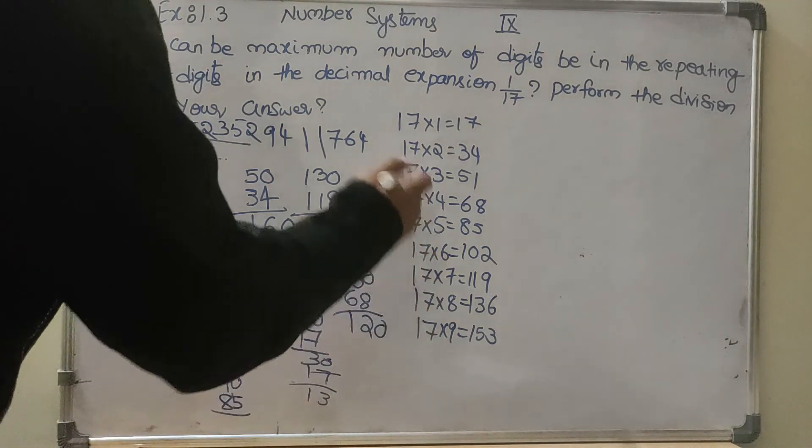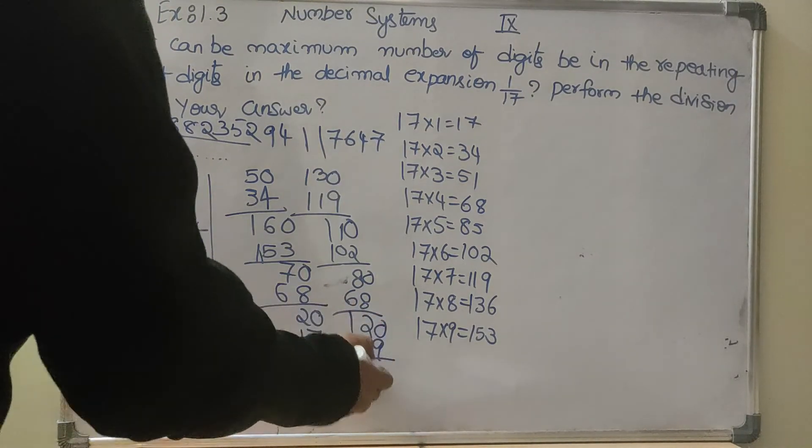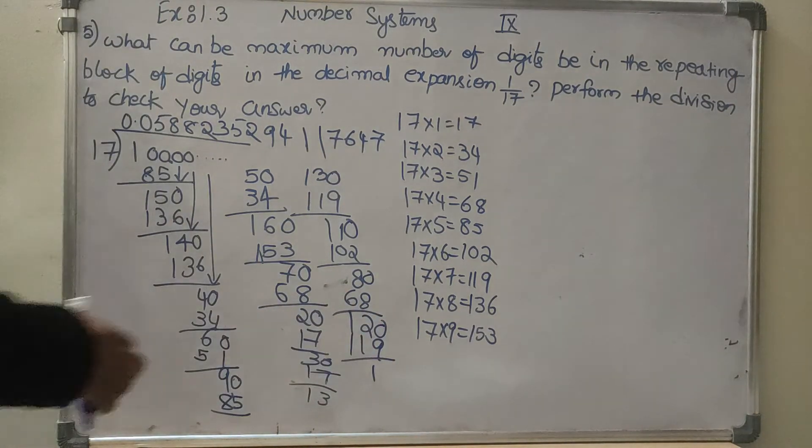0 comes here, so 7 times, 119, 1 is the remainder. So 1 is the remainder means again it comes from here, so again 0.5 will start here.